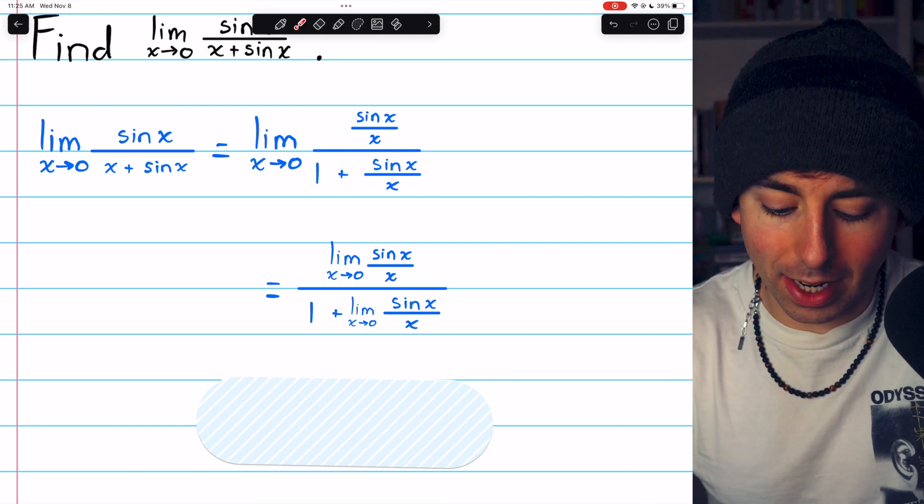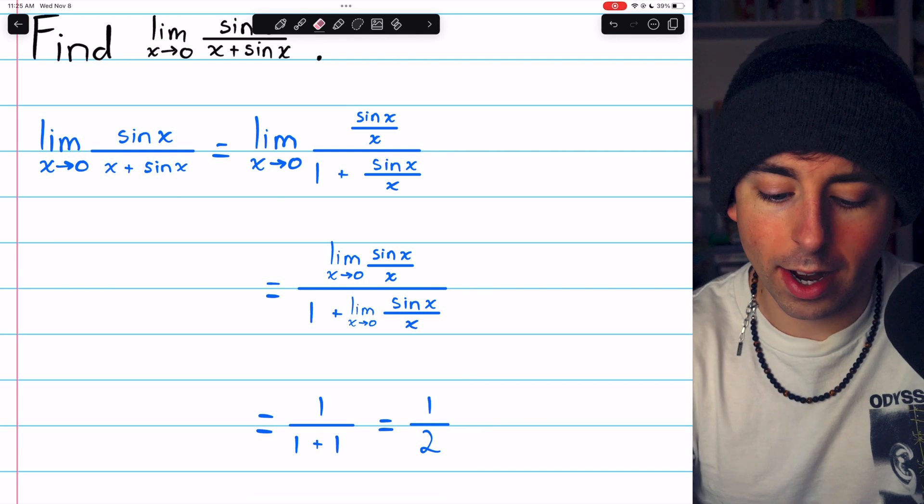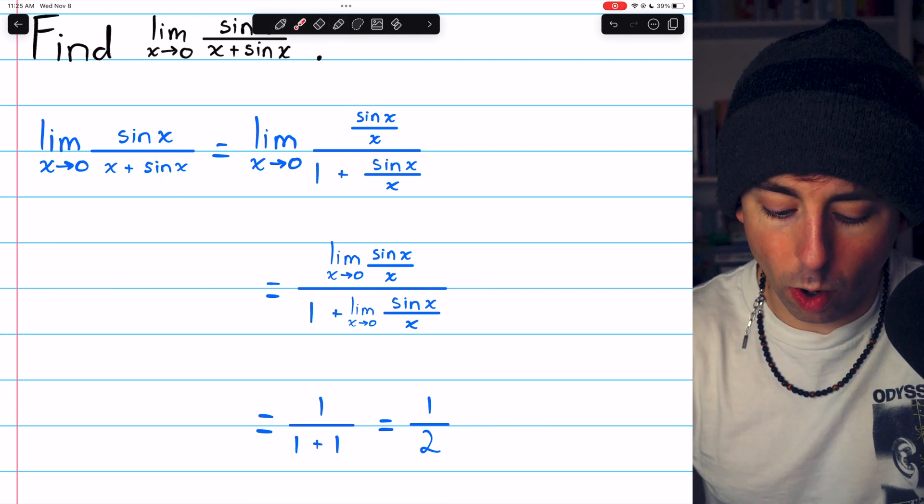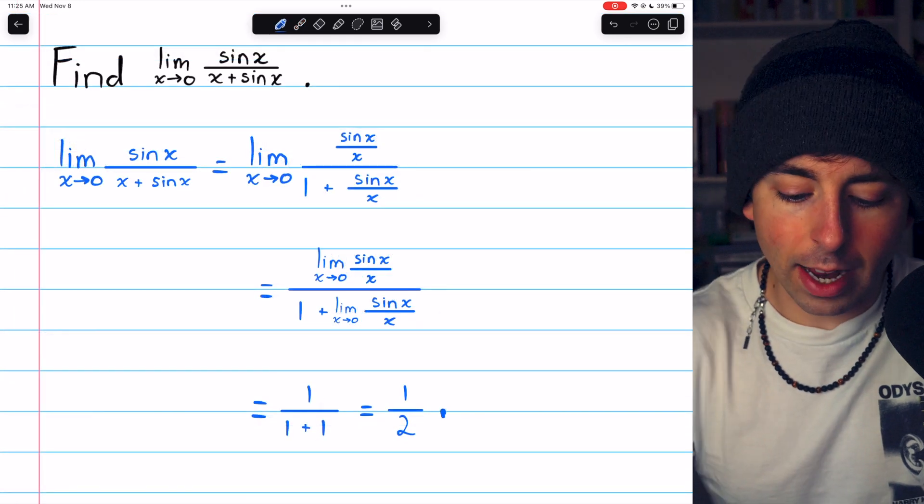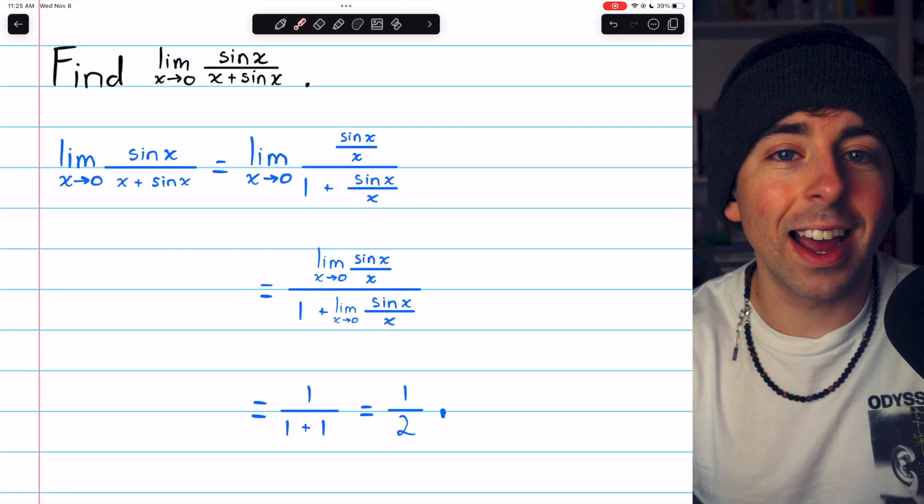Of course, this limit is well known. We know it equals one. So this is one over one plus one, which is one half. And that is the limit of sine x over x plus sine x.